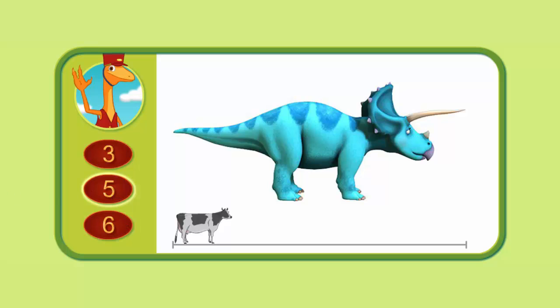Let's measure this triceratops to see if you're right. One, two, three, four, five. This triceratops is five cows long. Great job!